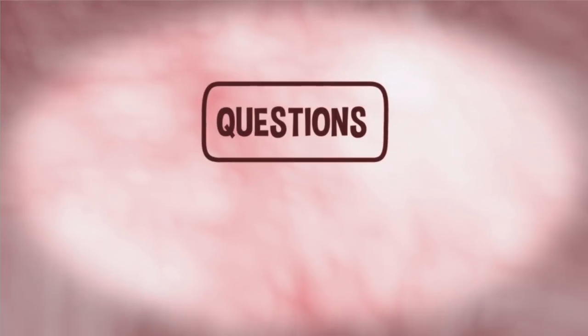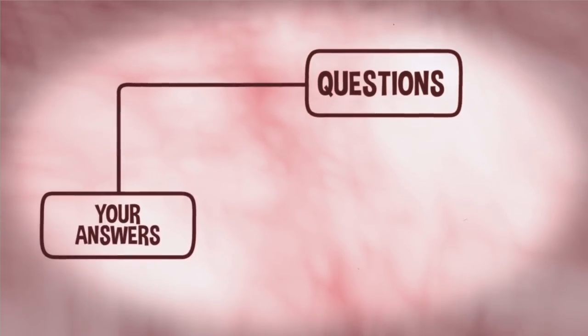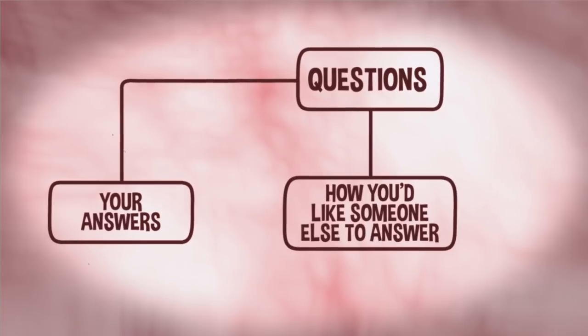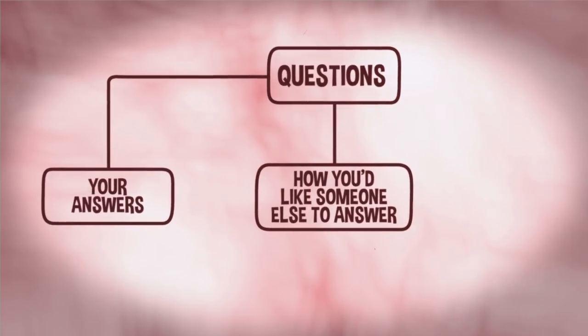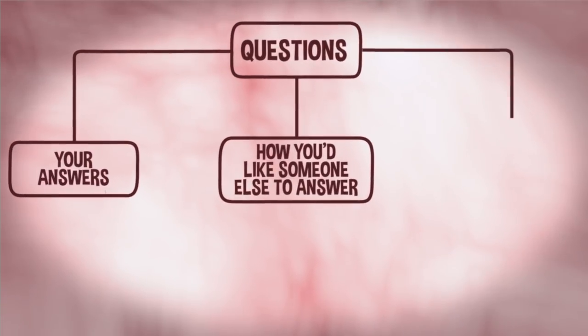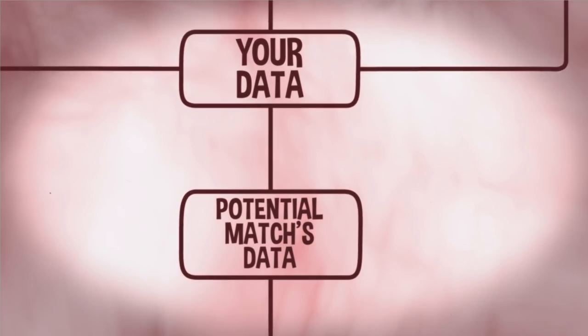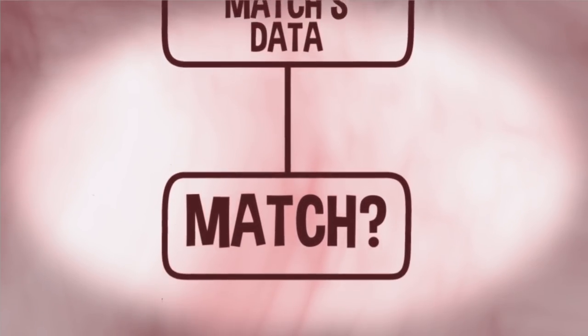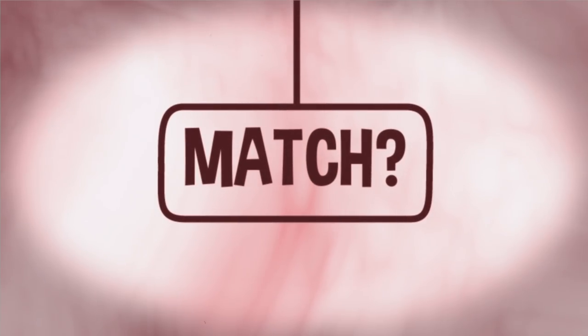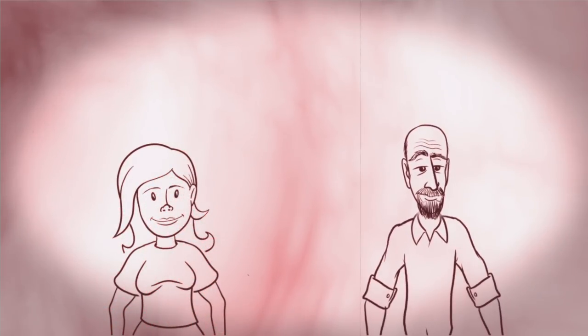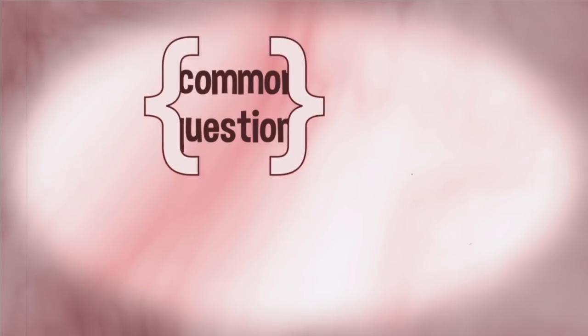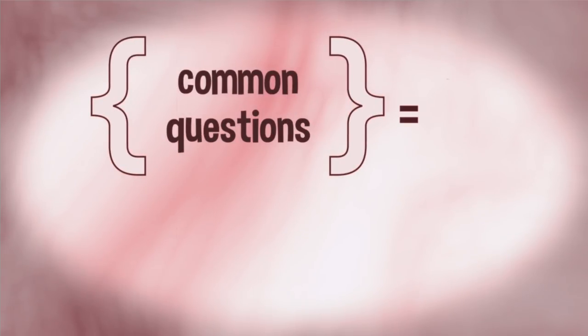So we added one final data point. For everything that OkCupid asks you, you have a chance to tell us the role it plays in your life. This ranges from irrelevant to mandatory. So now, for every question, we have three things for our algorithm: first, your answer; second, how you want someone else — your potential match — to answer; and three, how important the question is to you at all. With all this information, OkCupid can figure out how well two people will get along. The algorithm crunches the numbers and gives us a result.